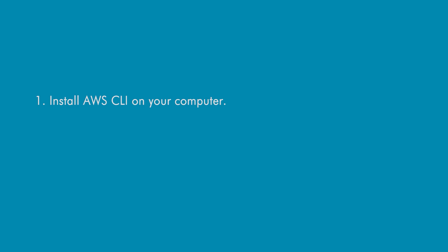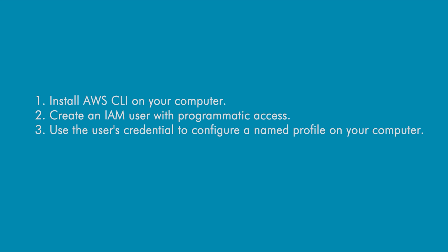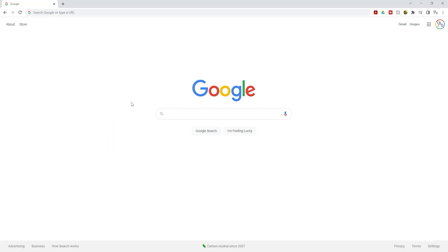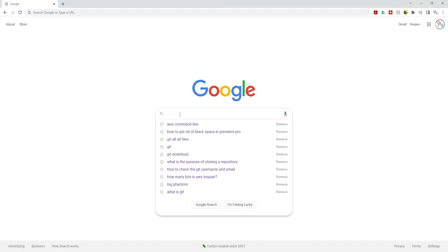To configure a named profile on your computer, you must install AWS CLI, then create an IAM user with programmatic access, then use the user's credentials to configure a named profile. To install the AWS CLI, open Google and type 'AWS command line' in the search box.